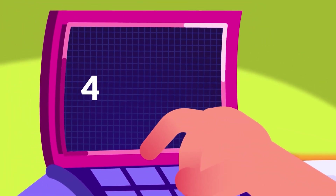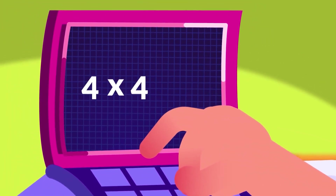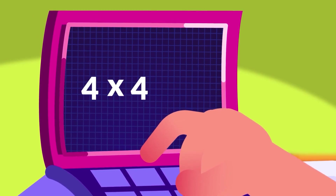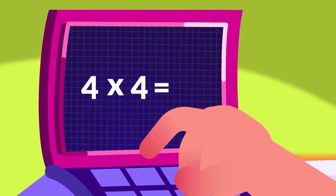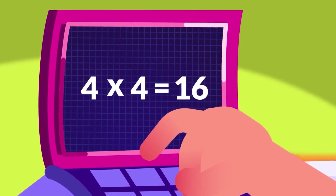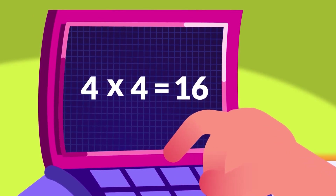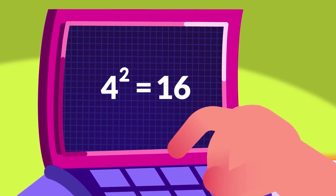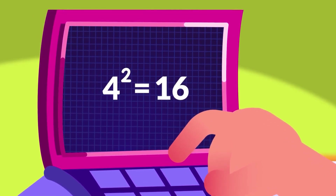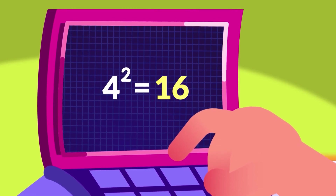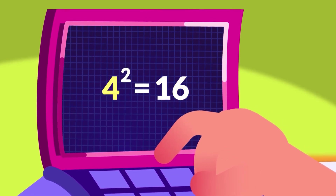Similarly, if we multiply 4 by itself — that is 4 by 4 — the product will be 16. This can also be written as 4 squared equals 16. We can say then that 16 is a square of 4.